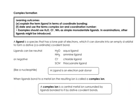You must understand the key vocabulary. Words like ligand, complex ion, and coordination number — you must be able to define. Here's the definition of ligand, here's the definition of the complex ion, and on the next slide you'll see the definition of coordination number.